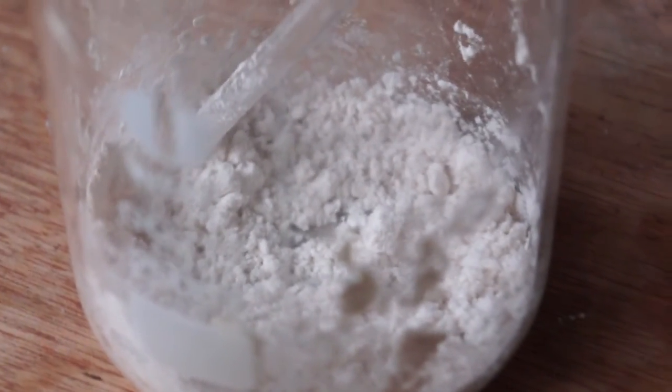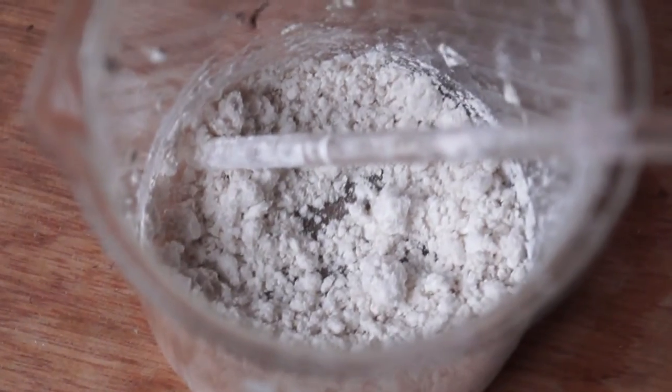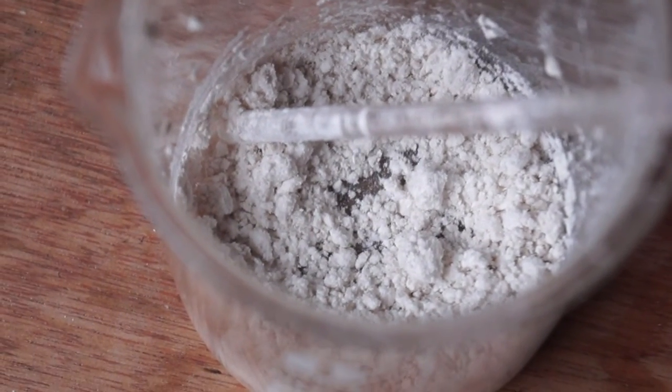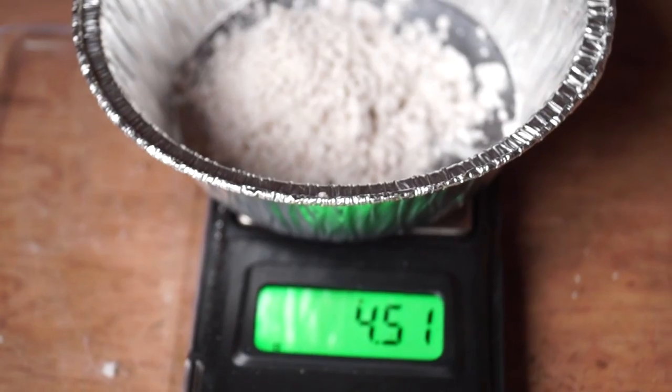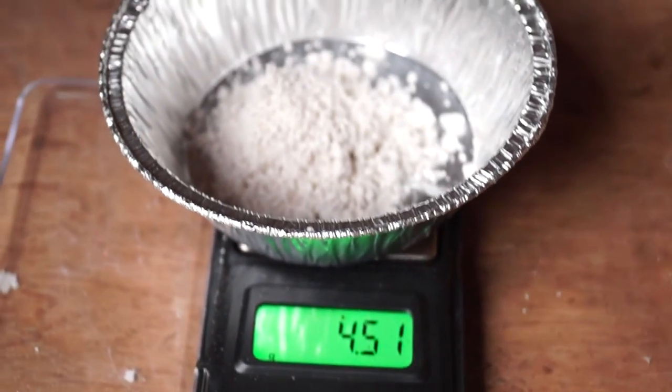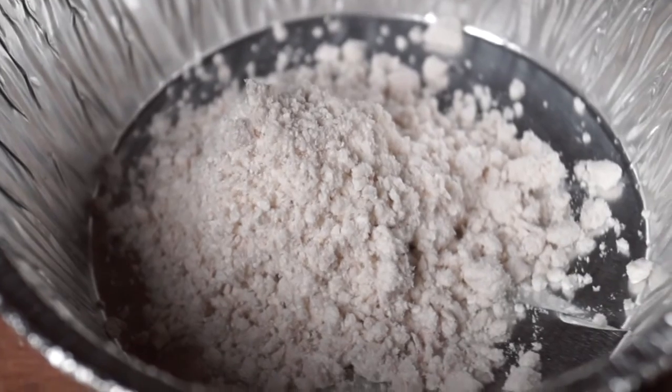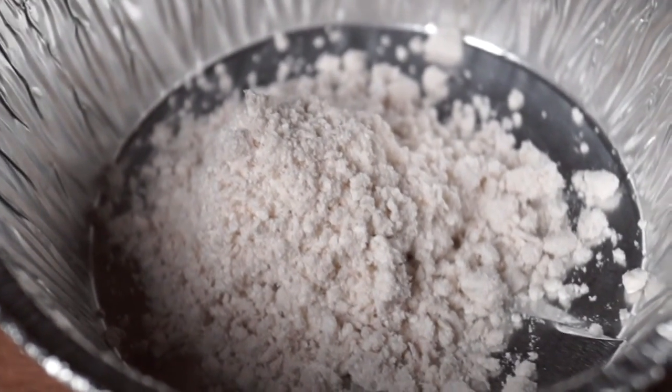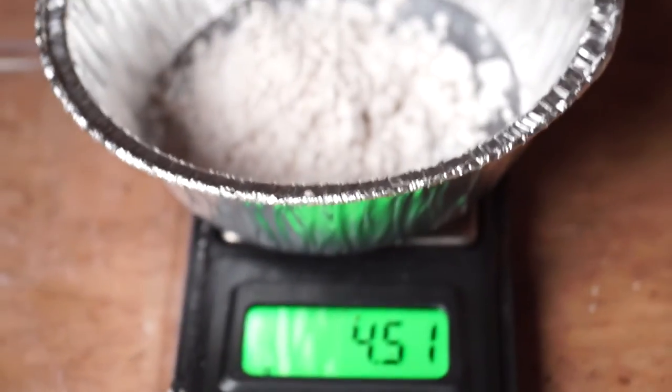I then weighed the product and found it to have a mass of 4.51 grams. This works out at a yield of 79%. This isn't something to shout about, but I believe if I was working with greater amounts of aspirin, the yield could be increased significantly. And that's how you prepare salicylic acid from aspirin tablets.